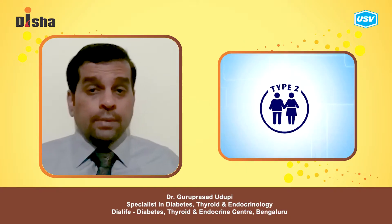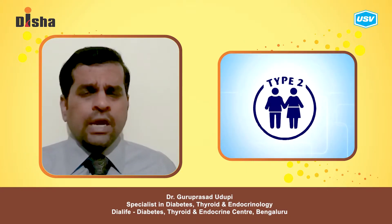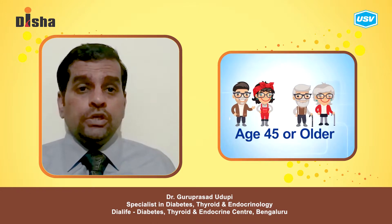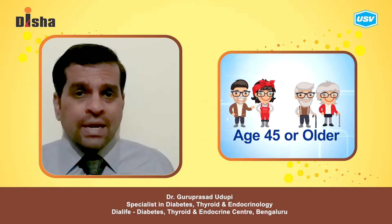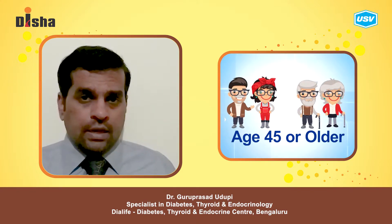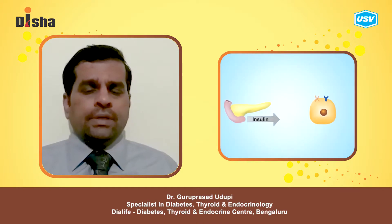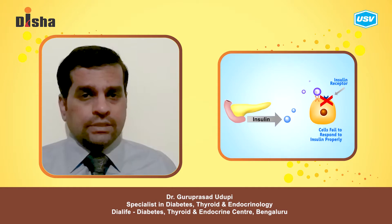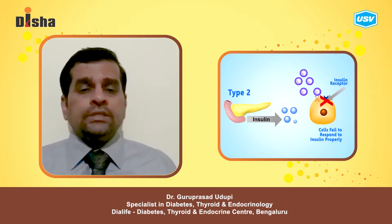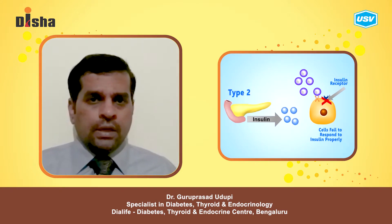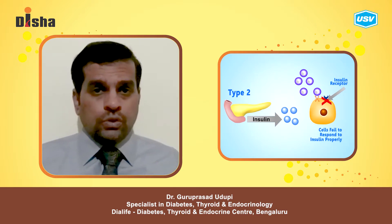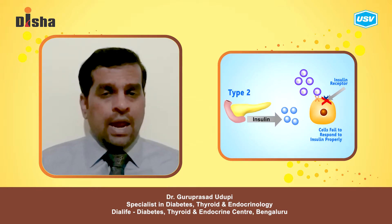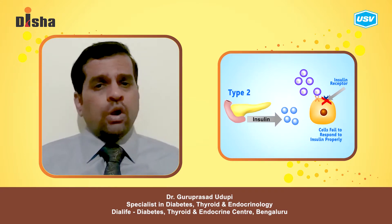Type 2 diabetes is one of the commonest forms of diabetes, which usually occurs in middle-aged and elderly people. This diabetes is the result of insulin resistance, wherein the insulin doesn't act properly, and this leads to a rise in the blood glucose.